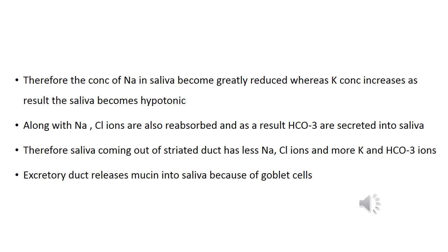Along with sodium, chloride ions are also reabsorbed, and as a result bicarbonates are secreted into the saliva. Therefore, saliva coming out of the striated duct has less sodium and chloride ions and more potassium and bicarbonate ions. The excretory duct releases mucin into the saliva because of the presence of goblet cells.